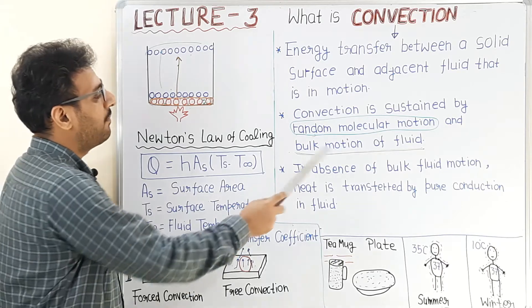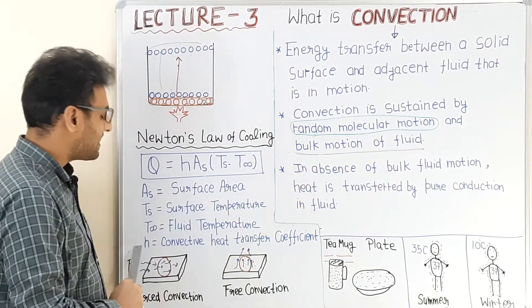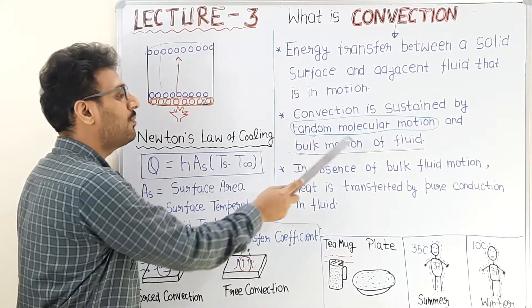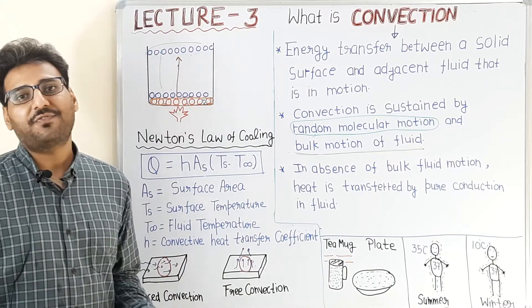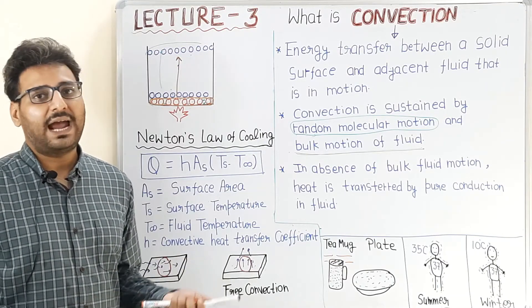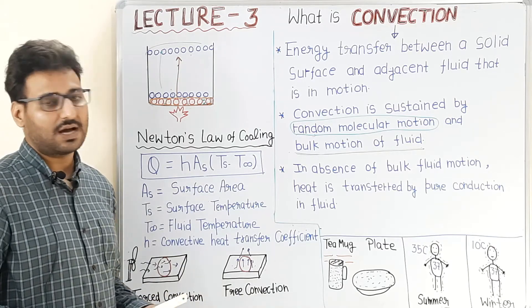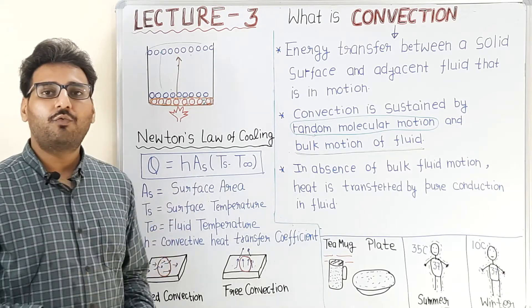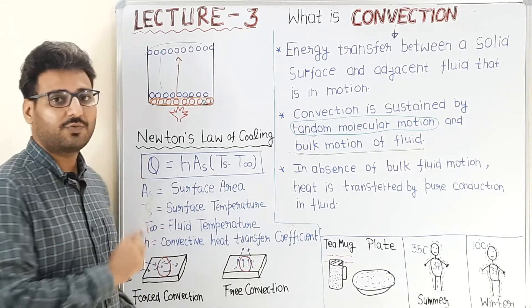There are basically two types of convective heat transfer processes: forced convection, in which bulk motion of the fluid is done by external power, and free convection, in which bulk motion of the fluid is done naturally due to the density difference of hot and cold fluid and by buoyancy forces. Now we are going to discuss what is heat transfer coefficient and what are its effects on the heat transfer rate.